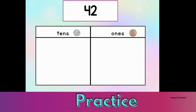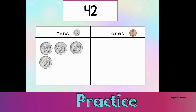We will need four tens and two ones. Third, let's place the dimes and pennies, or tens and ones, on the place value chart. We're going to start in the tens: one ten, two tens, three tens, four tens. Now let's move on to the ones: one, two. That's two pennies.